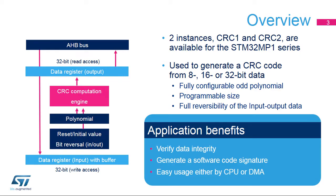CRC stands for Cyclic Redundancy Check. The CRC calculation unit is used to generate a CRC code on 8, 16, or 32 bits of data using a configurable polynomial value and size. The CRC-based techniques can be used to verify data transmission or storage integrity. The CRC calculation can also be used to compute the signature of the application software during run time, to be compared with a reference signature generated at link time and stored at a given memory location.